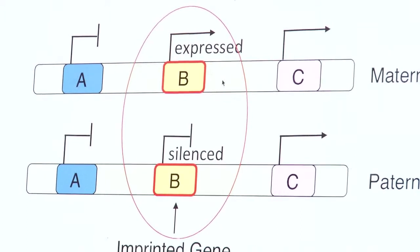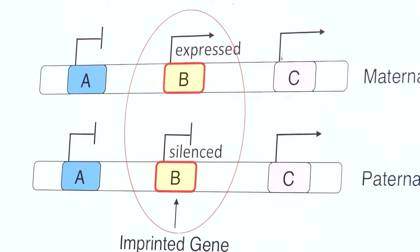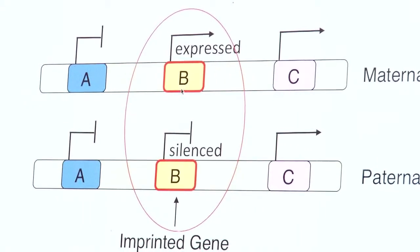But for a very small number of genes, a few hundred genes, one copy is active, the other copy is silent. So we call these imprinted genes.